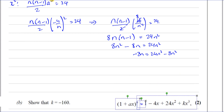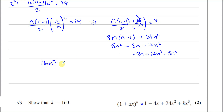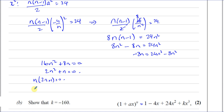Rearranging gives us the quadratic: 16n² + 8n = 0, which simplifies by dividing by 2 to 2n² + n = 0, so n(2n + 1) = 0. Therefore either n = 0 or n = −1/2.